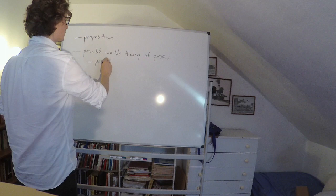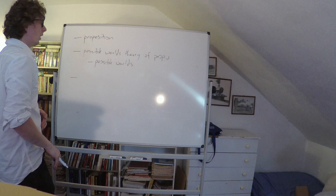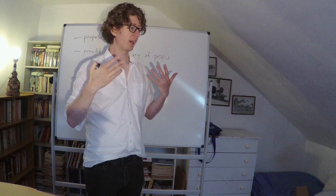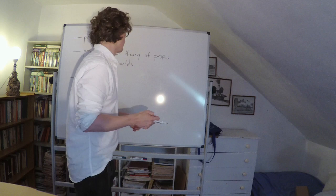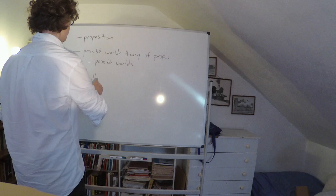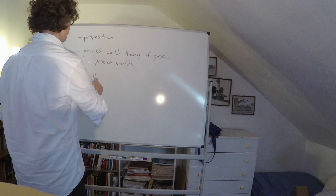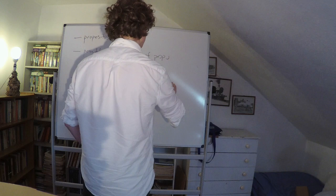Propositions is a long word, so we'll call them props. To understand the possible worlds theory of propositions, we're going to have to spend some time thinking about what a possible world is. Once we've done that, we're going to spend a little bit more time exploring the possible worlds theory of propositions by looking at what you might call logically complex propositions. A benefit of the possible worlds theory is that it gives you a very simple theory of how logically complex propositions work.